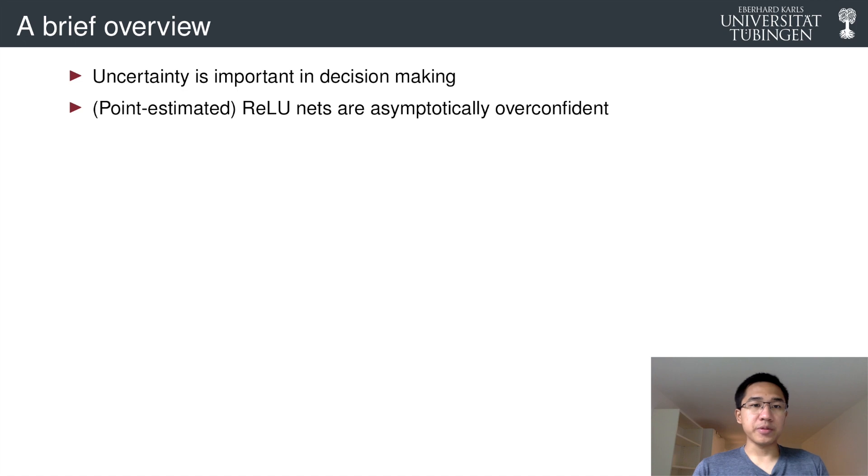But the problem here is that the usual network architecture, which is ReLU networks that is being used to make prediction in this problem, is asymptotically overconfident, meaning that far away from the training data, ReLU networks achieve confidence close to one, which is obviously wrong.